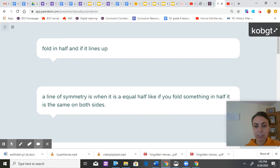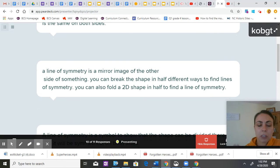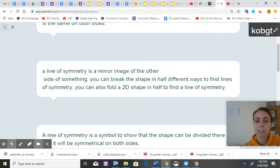So it's a mirror image. A line of symmetry is a mirror image of the other side of something. You can break the shape in half different ways to find the lines of symmetry. So I'm going to scroll down through here and let you read some of these.